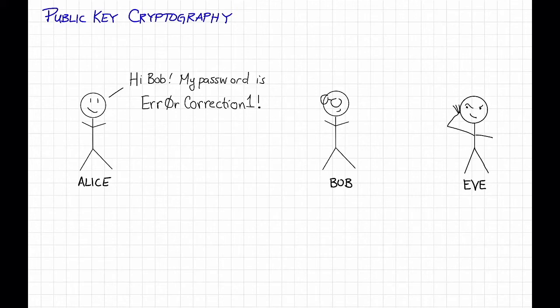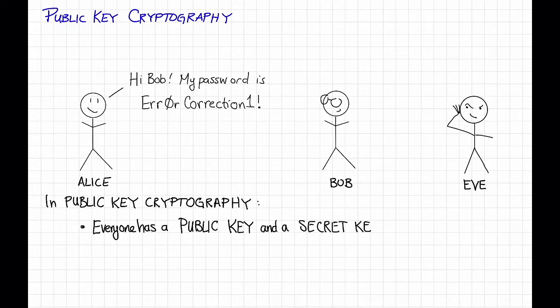The setup in public-key cryptography is the following. First, everyone has a public-key and a secret-key. And not surprisingly, the public-key is public, and the secret-key is secret.